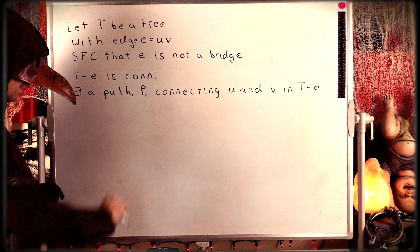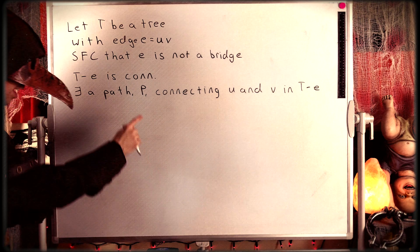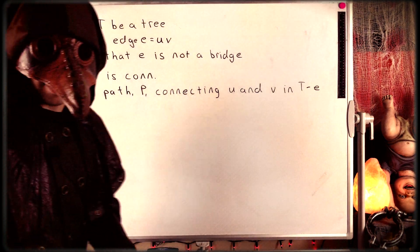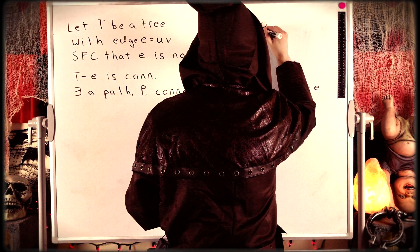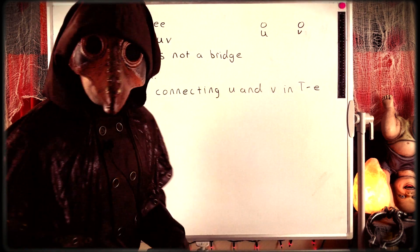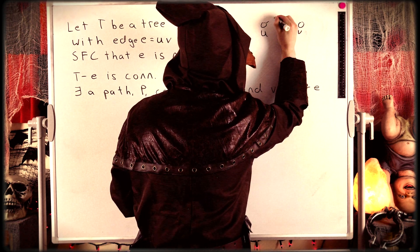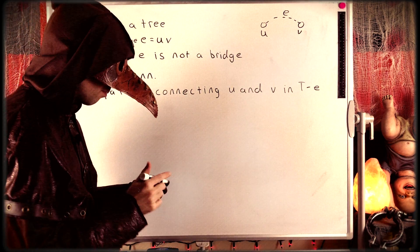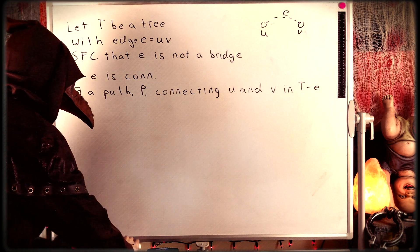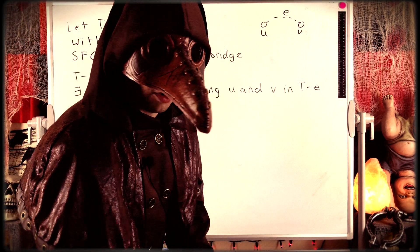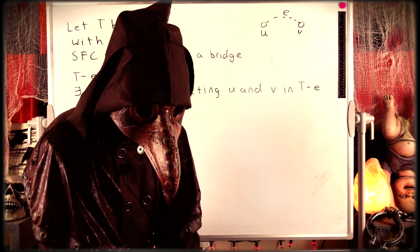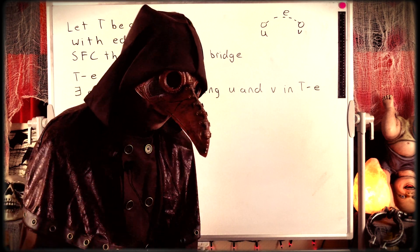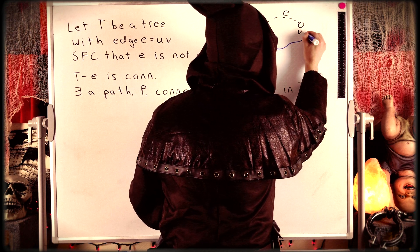Note that the path P does not contain the edge E, because P exists in T minus E — a graph that doesn't have E. So P certainly doesn't have E either. We had these vertices U and V joined by an edge E that we deleted, and in the resulting graph T minus E there must be some path connecting U and V, since we assumed E was not a bridge. So we delete it, the resulting graph is connected, and thus there exists a path connecting U and V in T minus E.